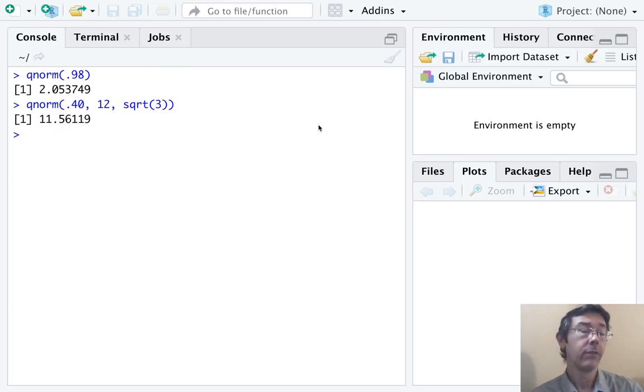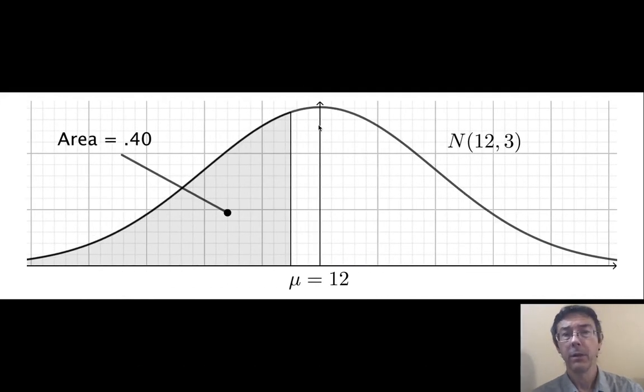So, we find an x-value of 11.56, which makes sense. That's just a little bit less than the mean. For x equals 11.56, we get 40% of the area to the left.